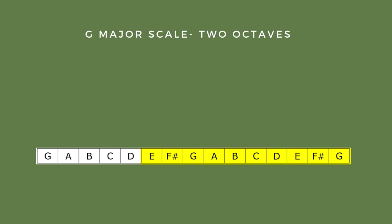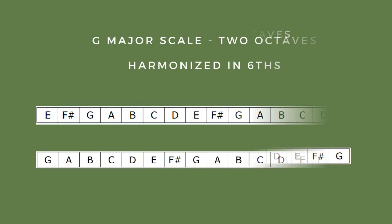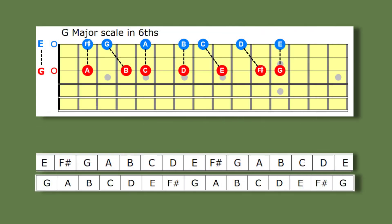Here's the G major scale, and now we'll layer that scale with notes that are a sixth above the original notes. And here's how it looks on the guitar. Again, the notes in red are the original notes in the G major scale, and the blue notes are the harmony notes a sixth above.